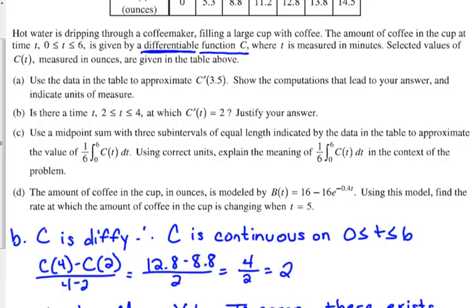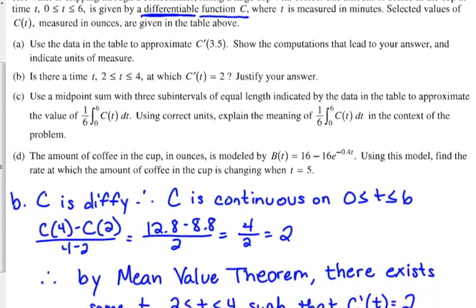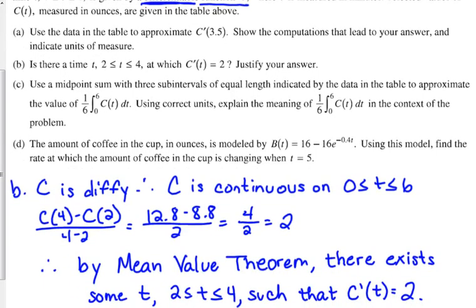So, when you do the midpoint sum, which I'm not going to go through it, but when you do that, you get 10.1 ounces. That is the average amount of coffee in the cup over the interval from 0 to 6. So, for those six minutes, the average amount of coffee in the cup is 10.1 ounces.